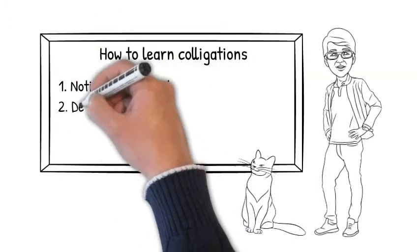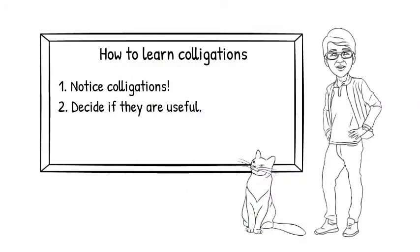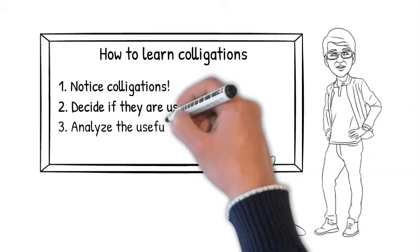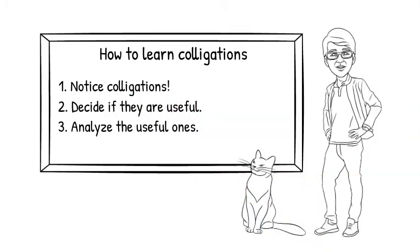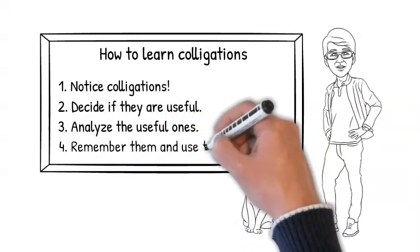Then you should decide if the colligations are useful. Be plus interested plus in plus gerund or noun is useful if you don't already know it. When you find something useful, then you should analyze it. This is what we did with the colligation with interested. We identified the parts that made it up. This is important for knowing how to use it. Then you need to remember the colligations and use them.